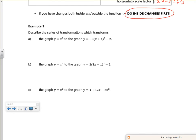So what have I got? So I've got to do inside first. So the inside first is just the plus four. So that's a translation (-4, 0).